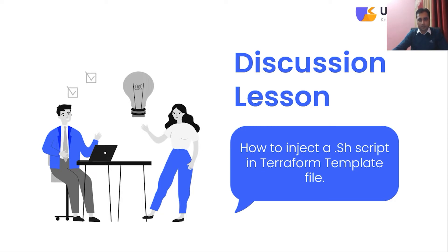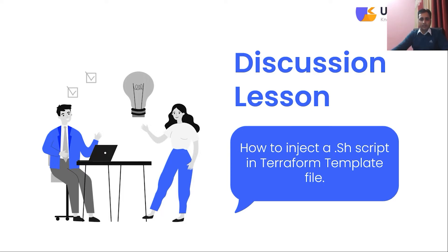I have a script — a .sh script — that is separate, and I want to inject my .sh script with my Terraform template file. The idea is that when you share user data inside the template file, the code length increases. Any time you want to change something, you have to open the main template file. But when you have a separate script file, you don't need to disturb your main code — you just make changes in the script file.